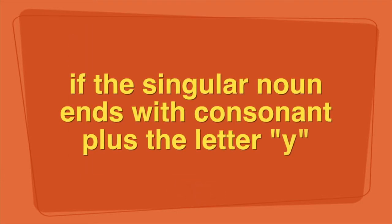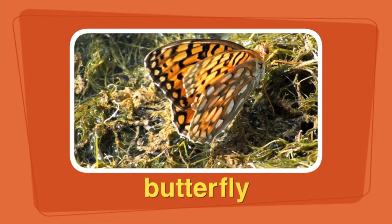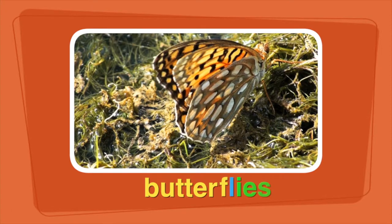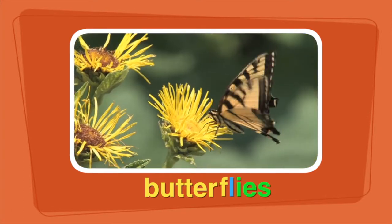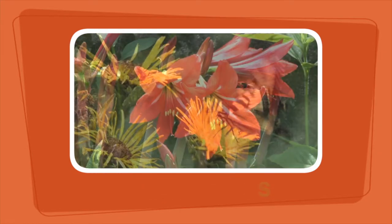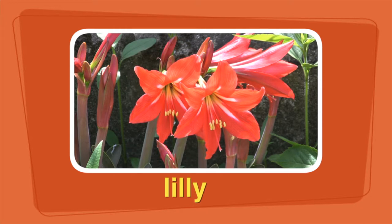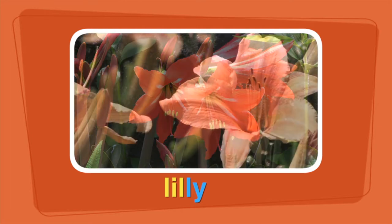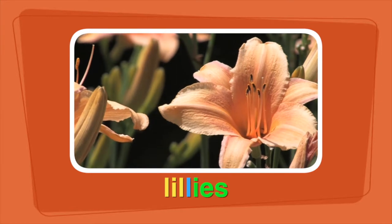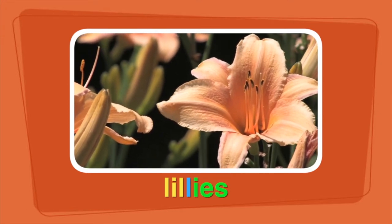If the singular noun ends with a consonant plus the letter Y, like the word butterfly, change the Y to IE and add an S to make it plural. The butterflies got nectar from the flower. The word lily ends with the consonant L and the letter Y. To make the word lily plural, change the Y to IE and then add an S. The lilies moved gently in the wind.